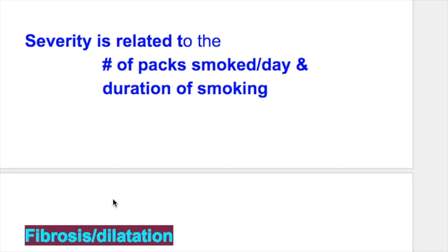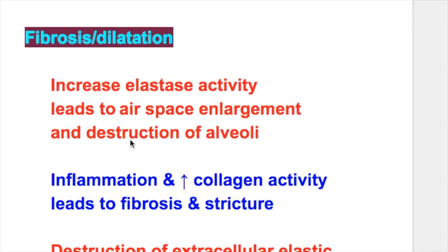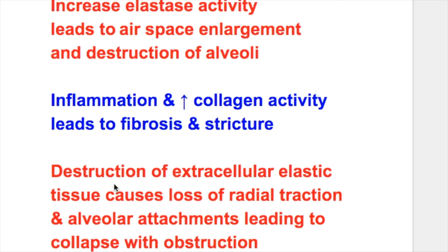Severity is related to the number of packs smoked per day and the duration of smoking. In emphysema, increased elastase activity leads to air space enlargement and destruction of alveoli. Whereas in chronic bronchitis, inflammation and collagen activity lead to fibrosis and stricture.